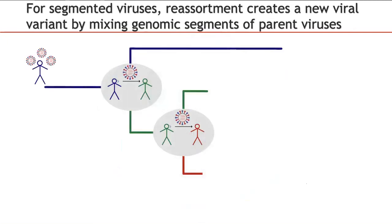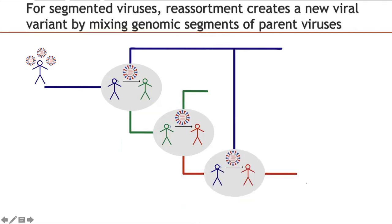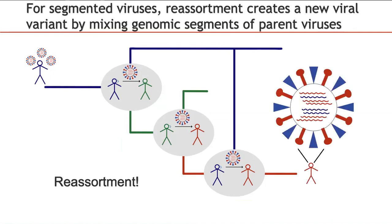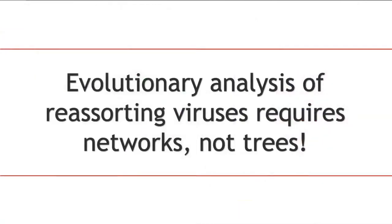In our toy example, imagine that the red person came into contact with both green and blue hosts. Then its cells carry two distinct viral variants and through reassortment produce a novel viral strain. As you can see, in order to depict the situation, we had to modify the tree by connecting blue and red lineages by a vertical line shown here, and thus having a network. Therefore, evolutionary analysis of reassorting viruses requires networks, not trees.